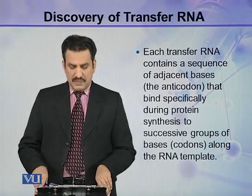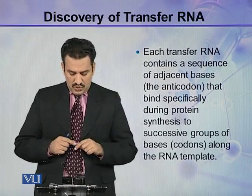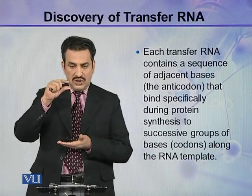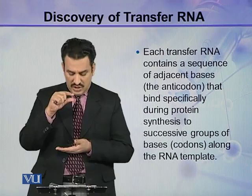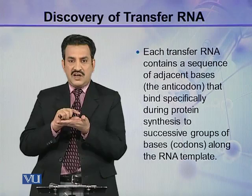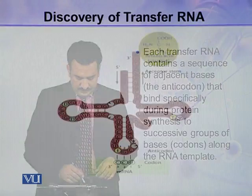Each transfer RNA contains a sequence of adjacent bases called the anti-codon, which binds specifically during protein synthesis to successive groups of bases called the codon on the RNA template. There is a specific sequence of bases on the tRNA molecule called the anti-codon, and similarly a specific sequence on the template RNA called the codon. The anti-codon and codon can identify each other and base pair.